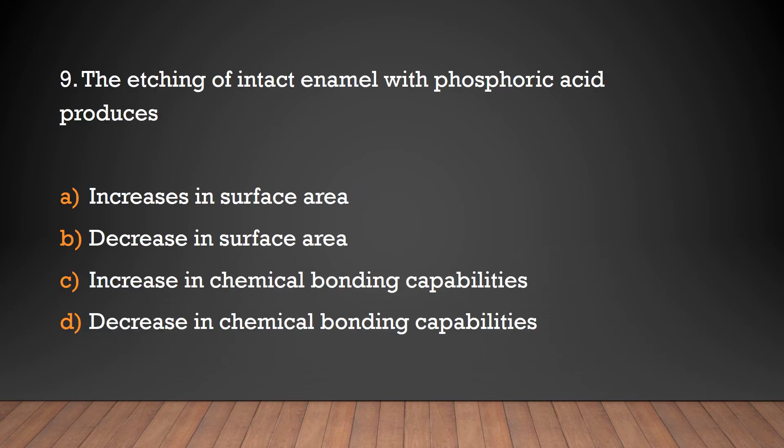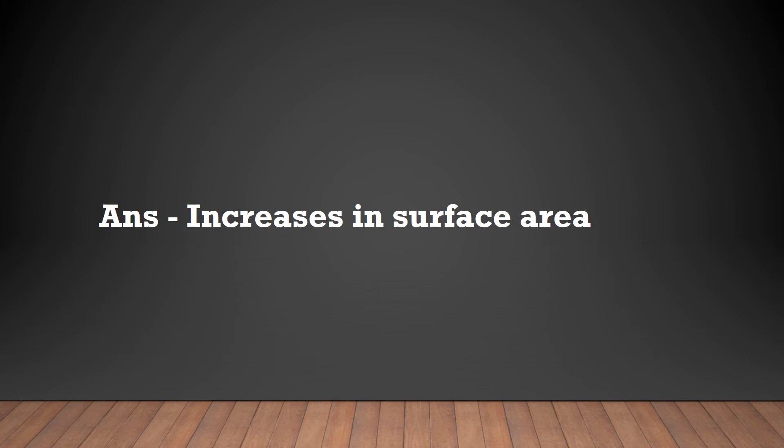The etching of intact enamel with phosphoric acid produces: increase in surface area, decrease in surface area, increase in chemical bonding capabilities, decrease in chemical bonding capabilities. Increase in surface area.